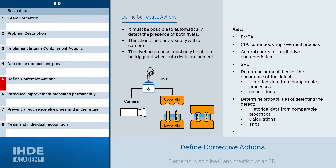For our case study, the following improvement measure was determined: it must be possible to automatically detect the presence of both rivets. This should be done visually with a camera, and the riveting process can only be triggered when both rivets are present.